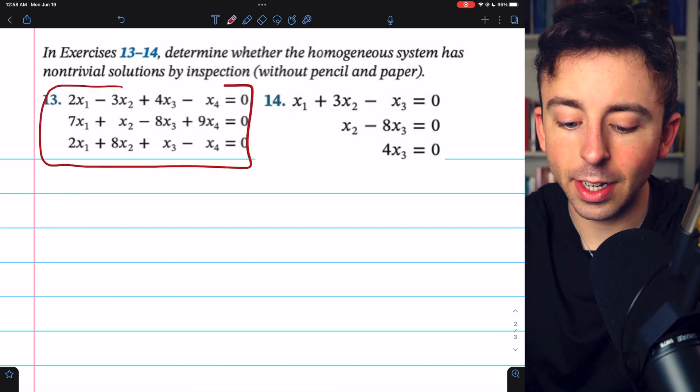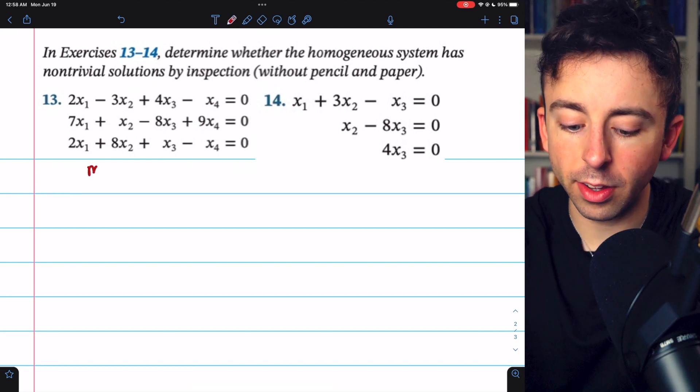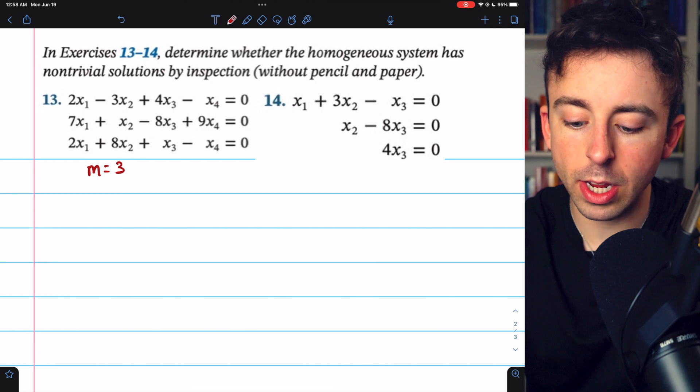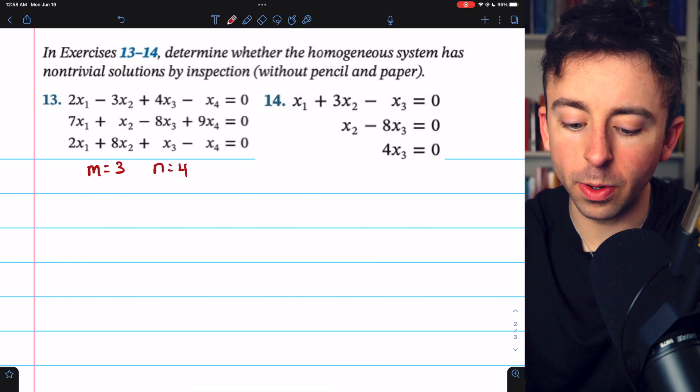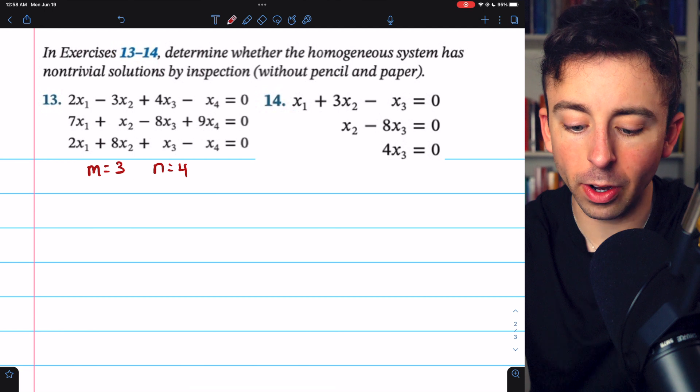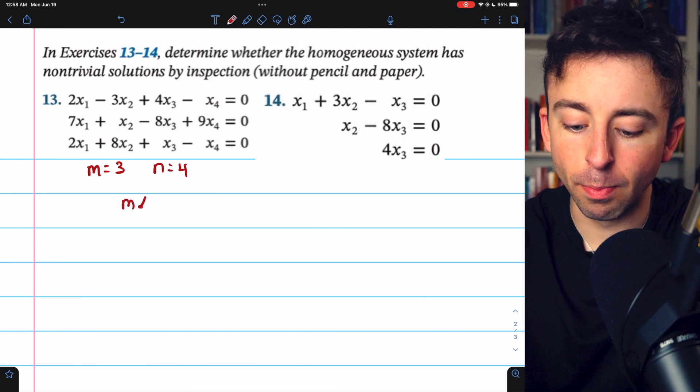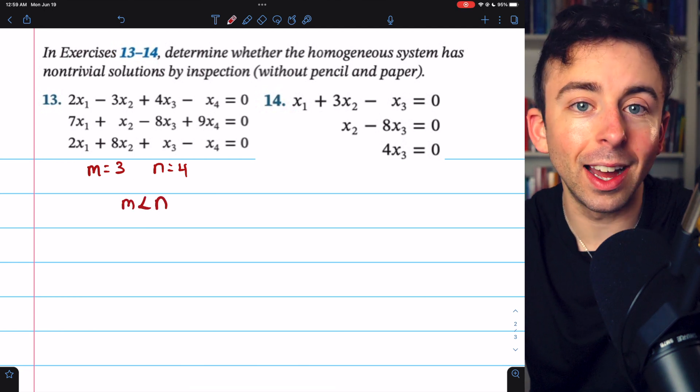Let's look at 13. Here we have three equations. We might say m equals three. However, we have four unknowns, x1 through x4. So since we have more unknowns than we have equations,